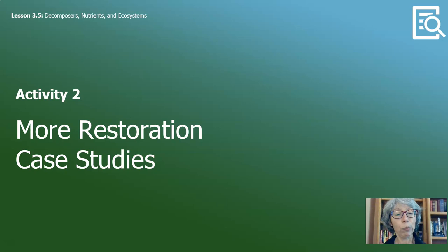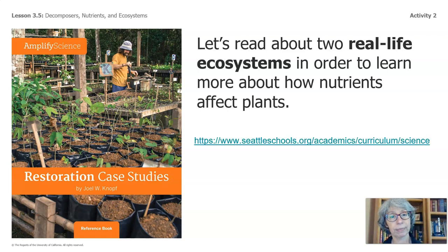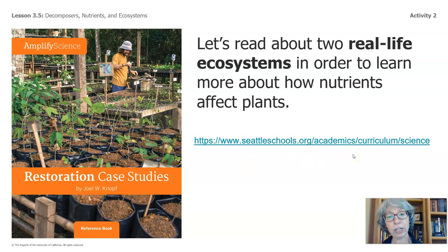On to activity two. We will be reading more from the book Restoration Case Studies. We'll read about two real-life ecosystems in order to learn more about how nutrients affect plants. You can find the PDF of this book on our website. Pause the video and write down this URL — there are no spaces, just periods and backslashes. Then scroll down to fifth grade, and at the end of the fifth grade unit there's a list of books; select Restoration Case Studies.